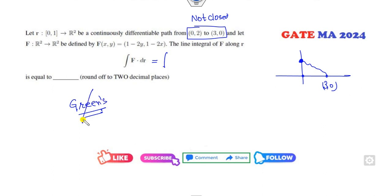Green's theorem is not applicable, so what you can do is substitute F dot dr. It will be (1 minus 2y) into dx plus (1 minus 2x) into dy. Now how can you integrate this part?